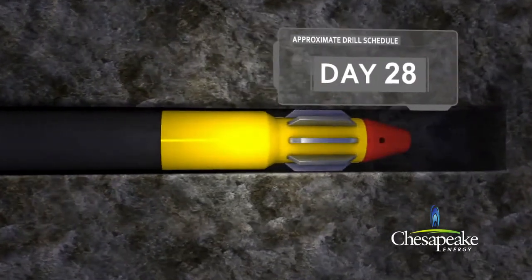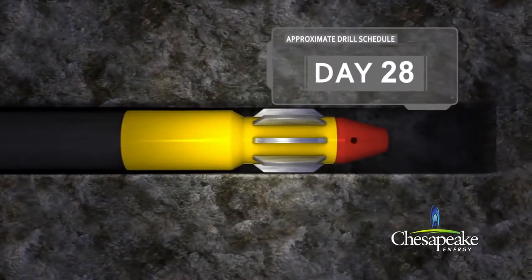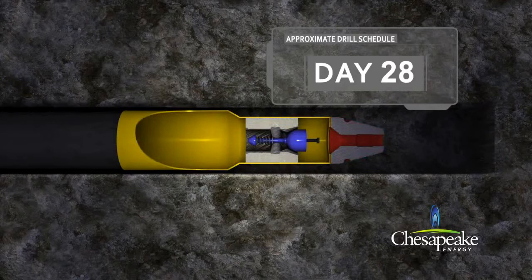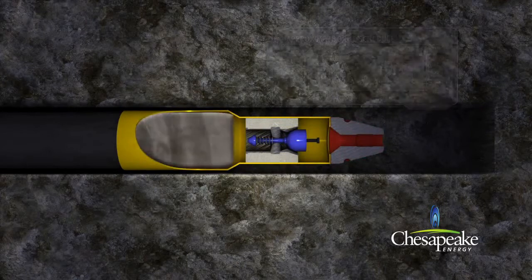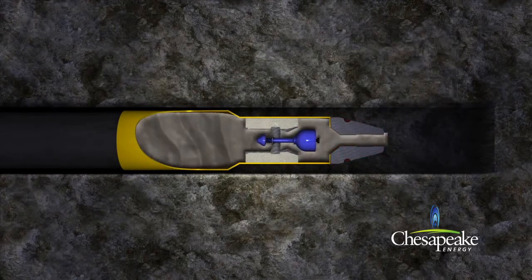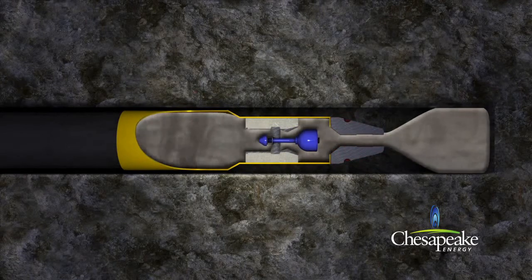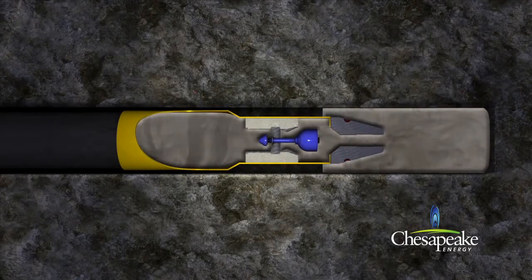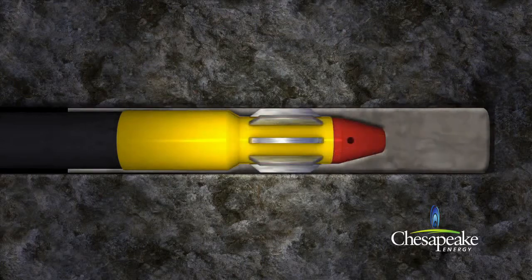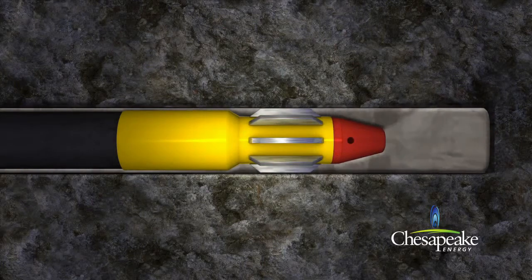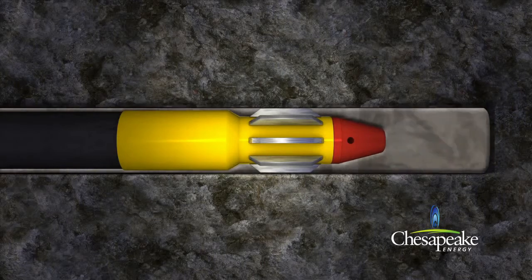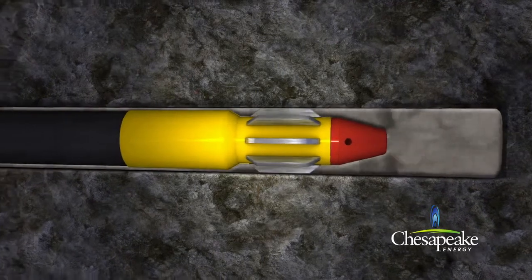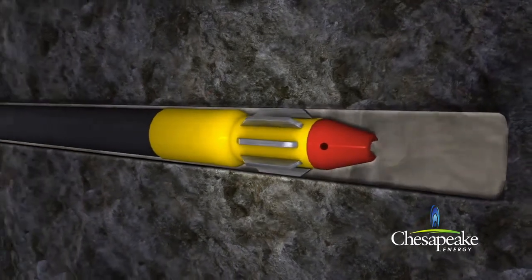Depending on regional geologic conditions, the cement is pumped around the outside casing wall to approximately 2,500 feet above the producing shale formation or to the surface. The cement creates a seal to ensure that formation fluids can only be produced via the production casing.